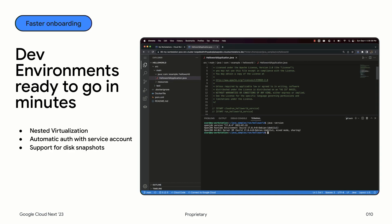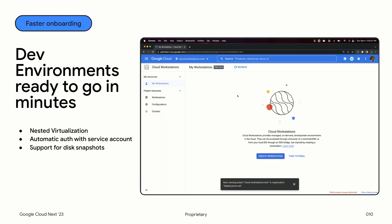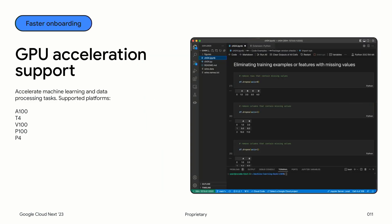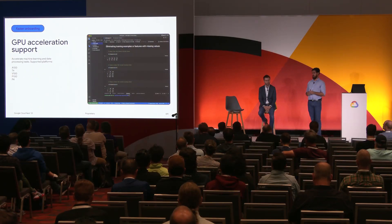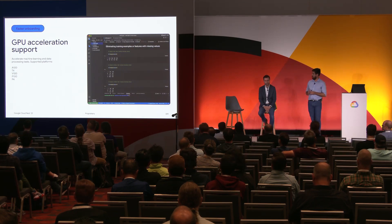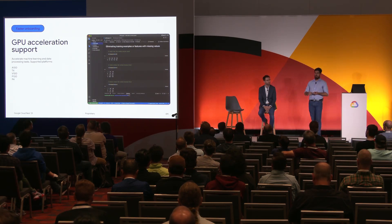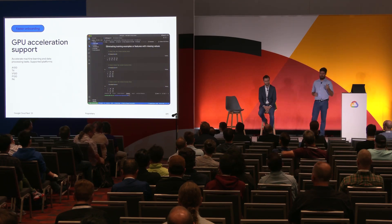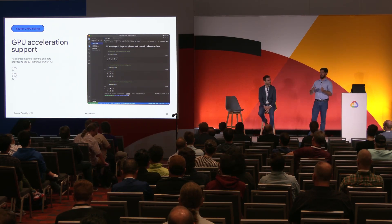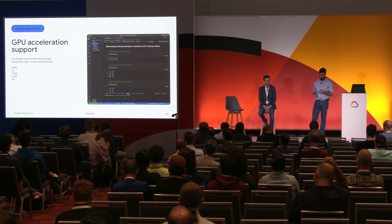This setup is pre-baked and defined centrally by platform teams. Next, GPU acceleration — we now have GPU support within Cloud Workstations, covering A100s, T4s, and H100s — all the most popular GPUs available on GCP. This allows developers working in VS Code, PyCharm, JupyterLab, or RStudio to benefit from GPU acceleration for machine learning or data science tasks, without worrying about GPU setup or CUDA driver configuration.